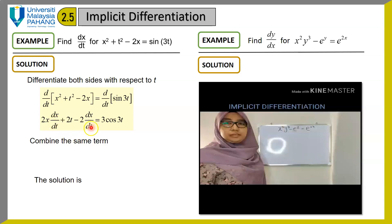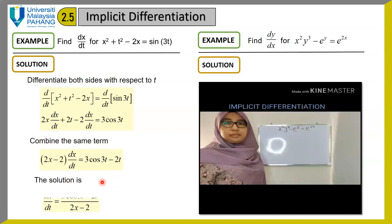We have dx/dt terms on both sides. Collect the dx/dt on the left hand side and bring 2t to the right hand side. Finally, simplify to obtain dx/dt equals (3 cos 3t minus 2t) over (2x minus 2).